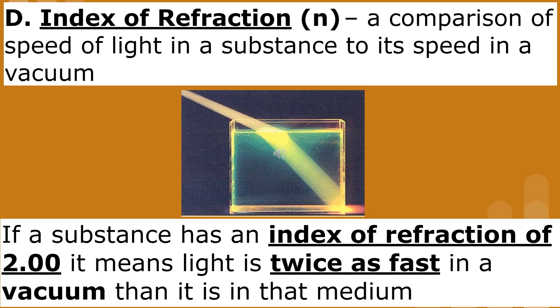This way of describing the speed of light in a medium is called the index of refraction. If a substance has an index of refraction of 2, it means that light is twice as fast in a vacuum than it is in that medium. Water has an index of refraction of 1.33.